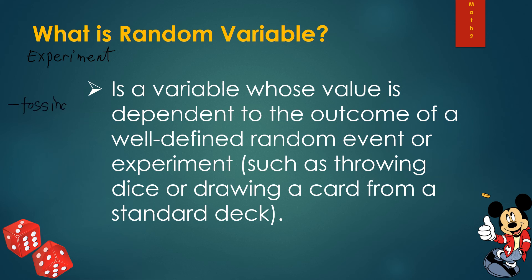Another example of an experiment is rolling a die. Note that 'die' is the singular form of 'dice' — if you have only one, it's 'die'; more than one is 'dice.' Rolling a die is an experiment because we are doing something on that object and expecting a result, which we call an outcome.